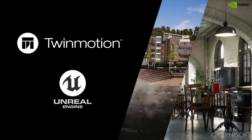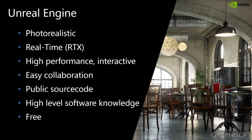Twin Motion uses Unreal Engine, which is freely available for everyone to develop your own platforms. First of all, what is Unreal Engine and why is that important for us? It would be more accurate to say Unreal Studio — that's their photo-realistic, real-time, high-performance and interactive rendering software. It provides easy collaboration and has a public source code, but it does require a very high level of software knowledge and high hardware requirements.